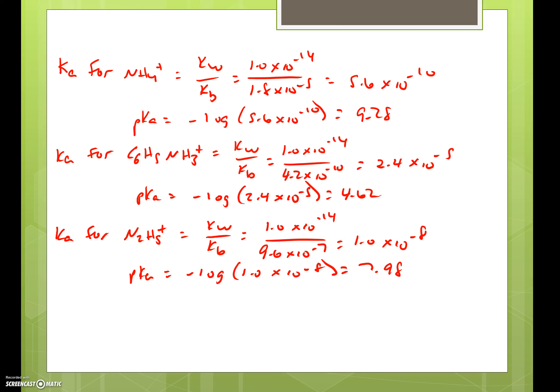If we do the same thing to C6H5NH3 plus, we can calculate the pKa. We're going to take the Kw divided by the Kb value and we get 2.4 times 10 to the minus 5. If we take the negative log of that value, we get 4.62.